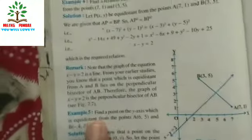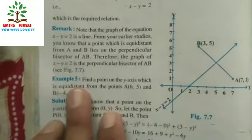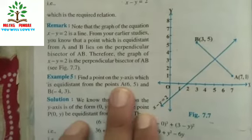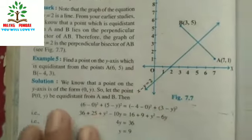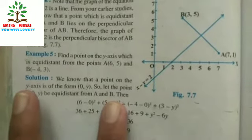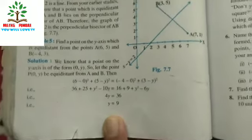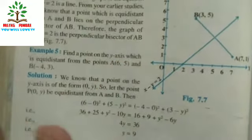In Example 5, we find a point on the y-axis equidistant from A(6, 5) and B(−4, 3). On the y-axis, x = 0, so the point is P(0, y). Setting AP = BP and applying the distance formula gives y = 9. Always remember: on the y-axis x = 0, and on the x-axis y = 0. We will now solve Exercise 7.1.